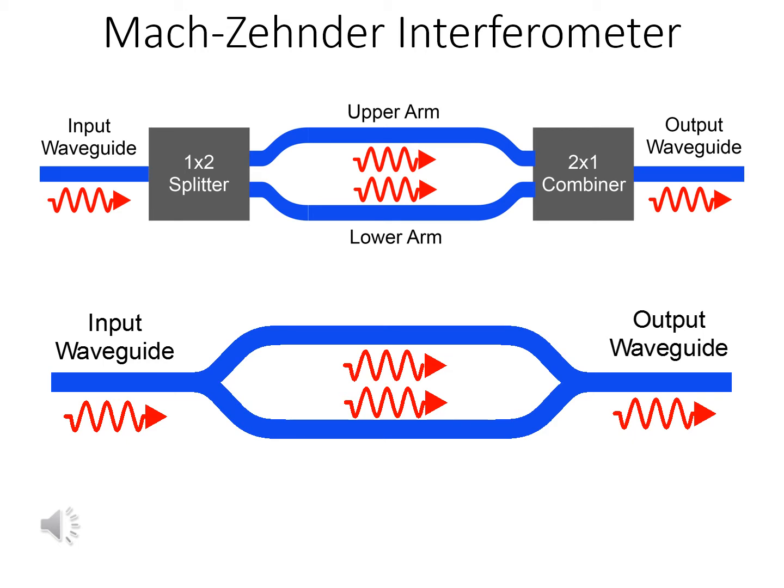A Mach-Zehnder interferometer can be implemented as a photonic integrated circuit with optical waveguides providing the beam paths, as pictured in the upper drawing.